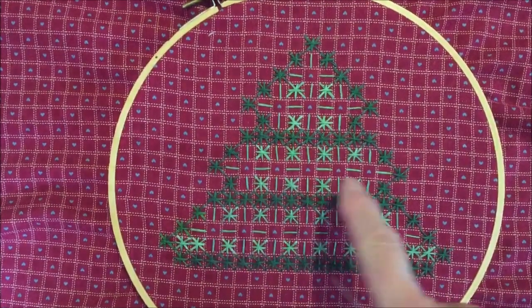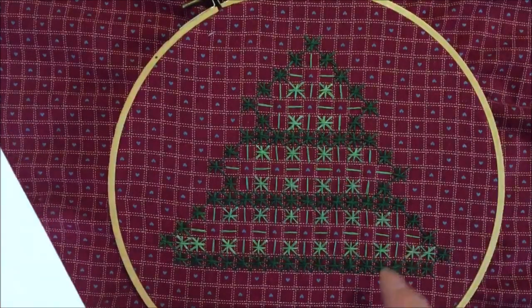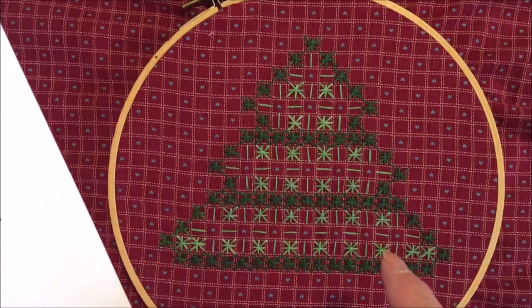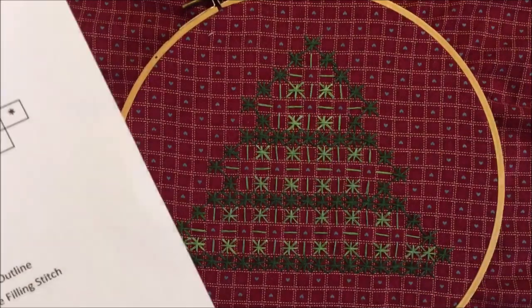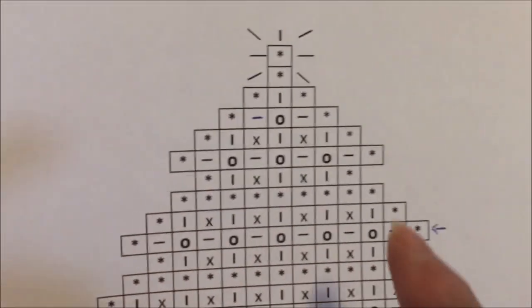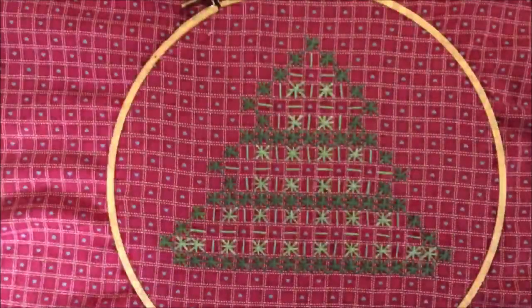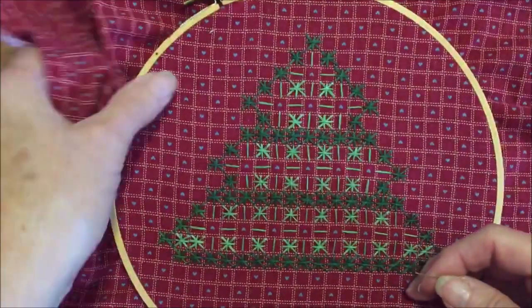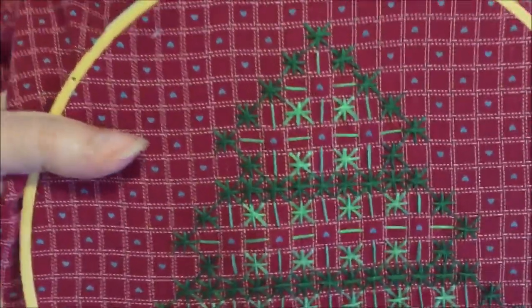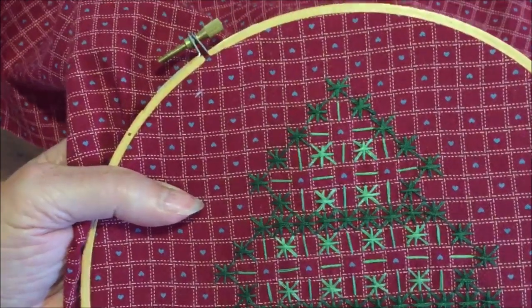All the running stitches are finished in both directions. The next stitch that we're going to be doing is a popular chicken scratch stitch which is called the woven circle stitch. And on the chart these are the little circles that you see. It's an easy stitch to do.